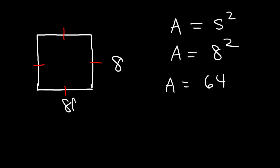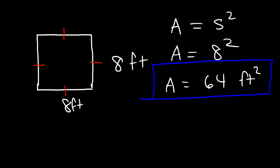If the side was 8 feet, the area would be 64 square feet. That's how you calculate the area of a square. Now let's go over some other problems associated with calculating the area of a square.